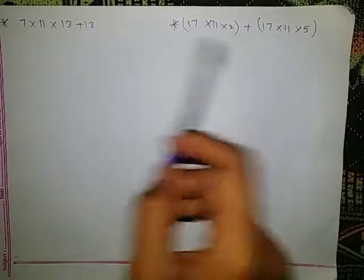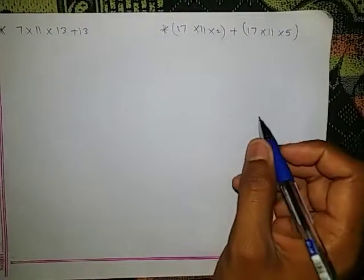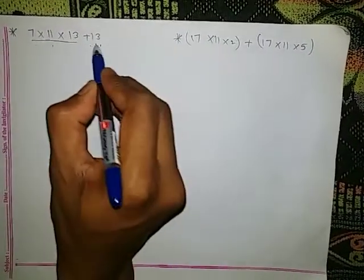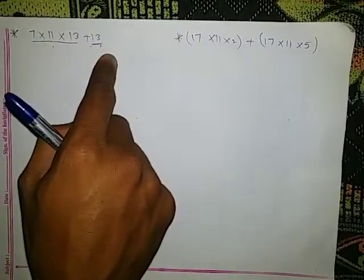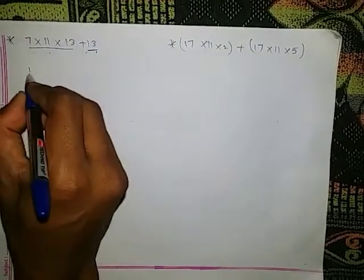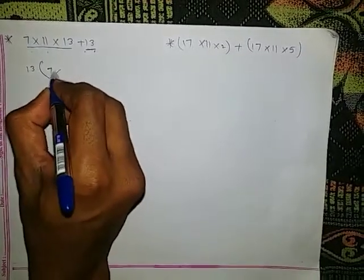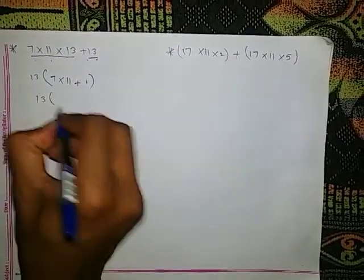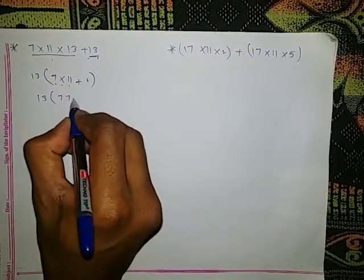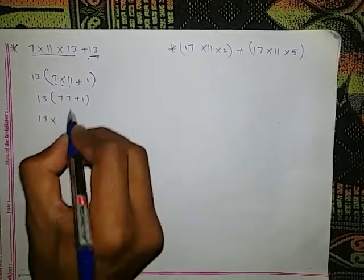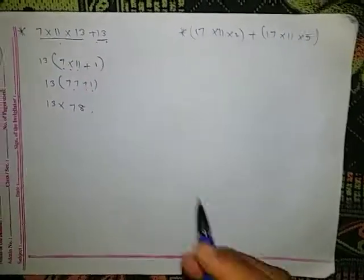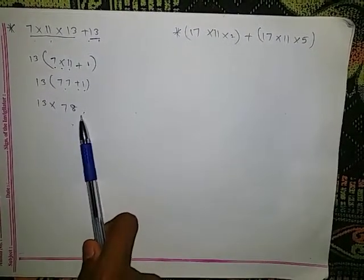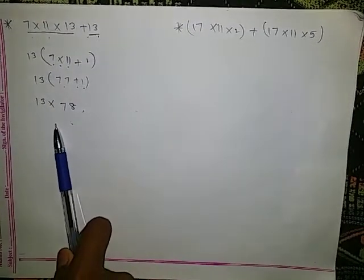Explain why the given numbers are composite numbers. Consider 7 × 11 × 13 + 13. Observing this, we have two terms, and the number 13 is common to both. Taking 13 common, we get 13 × (7 × 11 + 1) = 13 × (77 + 1) = 13 × 78. The given number can be written as a product of other numbers, so it is a composite number.